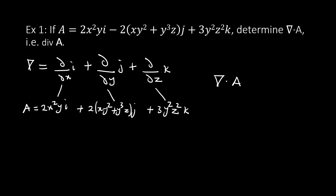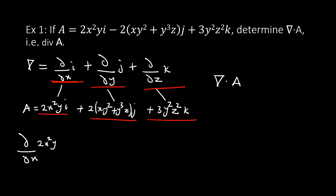Starting with the first term: the partial derivative with respect to x of 2x²y. Since i multiplied by i gives 1, we just differentiate 2x²y with respect to x, which gives 4xy.